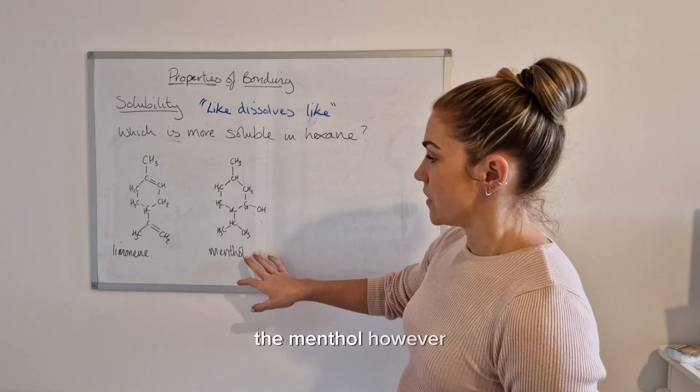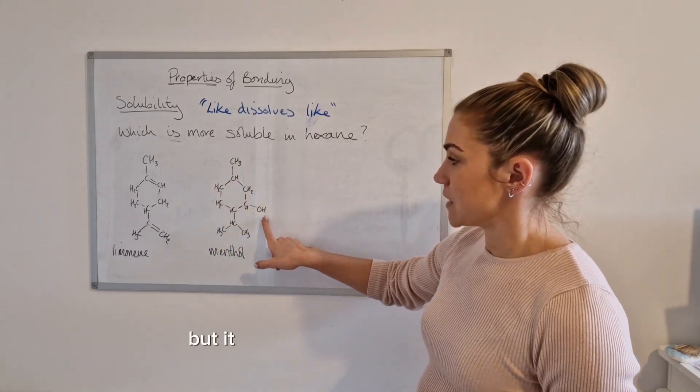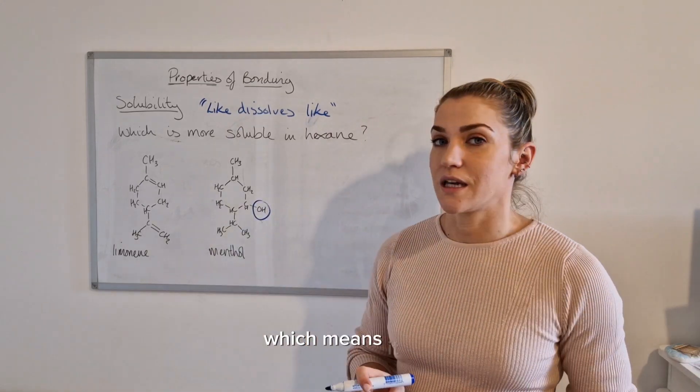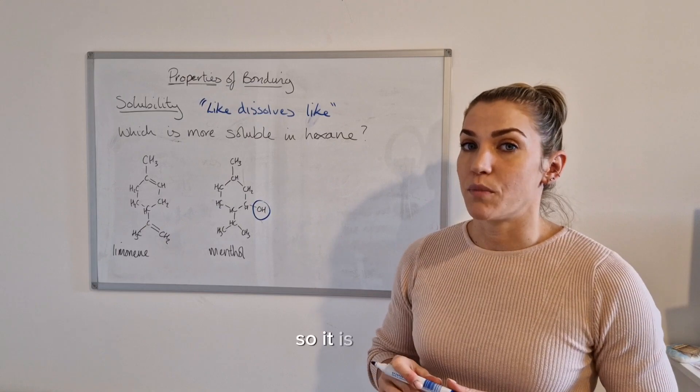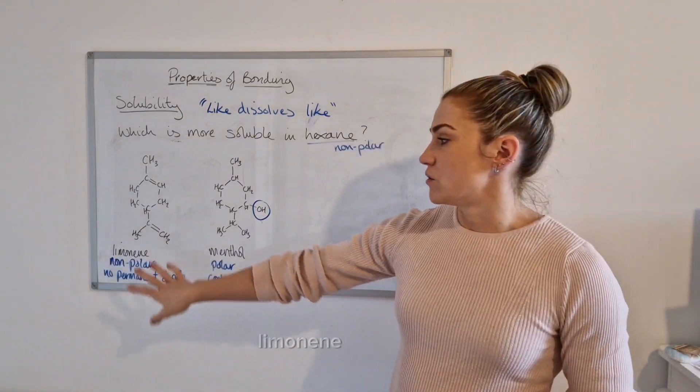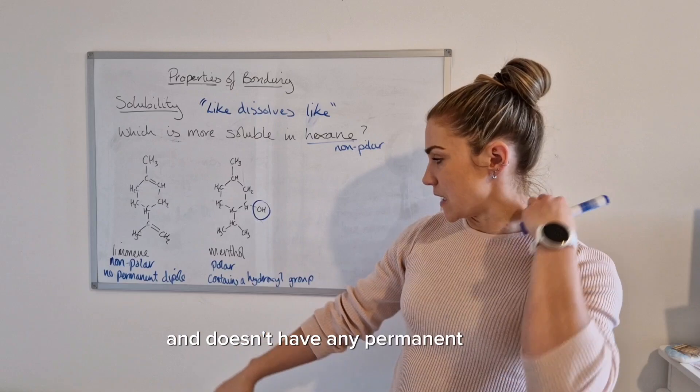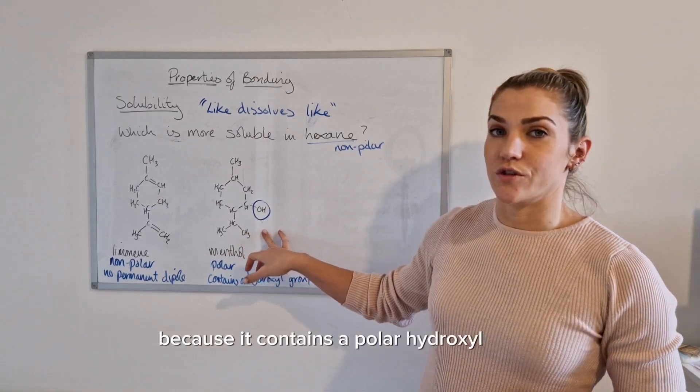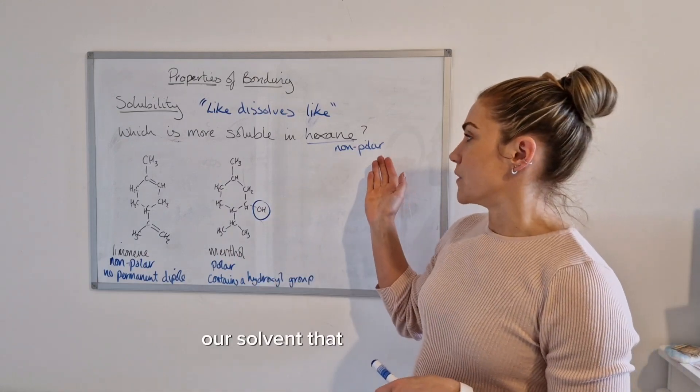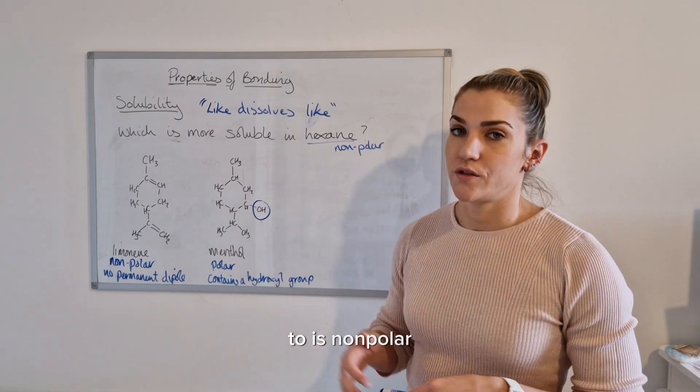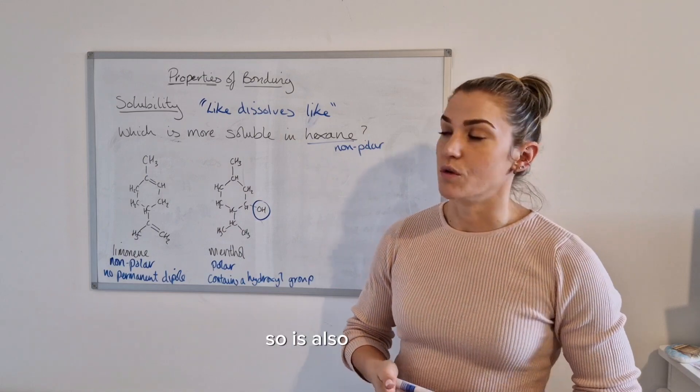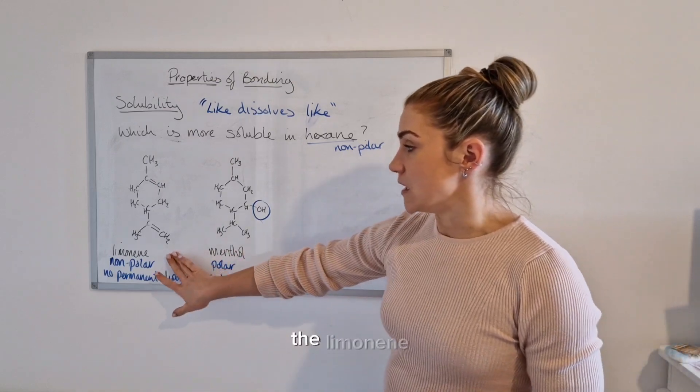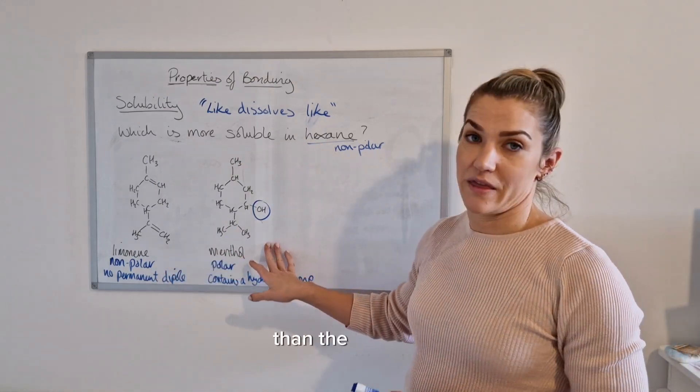The menthol, however, is mostly hydrocarbon, but it does have this hydroxyl group. So it's got this hydroxyl group here, which means it can take part in hydrogen bonding, so it is polar. So limonene is non-polar and doesn't have any permanent dipoles. The menthol is polar because it contains a polar hydroxyl group. Our solvent that we're comparing the two is non-polar, so hexane is a hydrocarbon, so it's also non-polar, which means because like dissolves like, the limonene will be more soluble in hexane than the menthol.